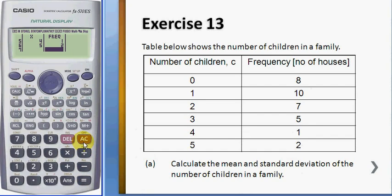After you key in all the data, press AC, then press shift one to call the stat function. Number five for variable, and number two is x-bar. The mean is 1.606.